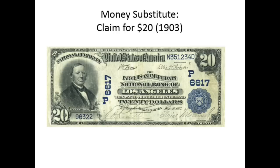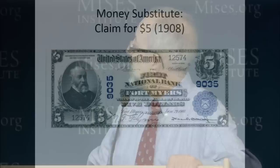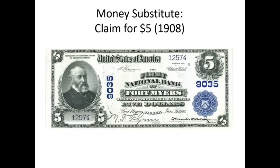You can see that on these notes, which were privately-issued. In 1903, this is a claim for $20 from a private bank — the Farmers and Merchants National Bank of Los Angeles. It says 'will pay to the bearer on demand $20.' Notice: it doesn't say that IS $20 — that's a claim to $20. $20 is one ounce of gold. Similarly, the First National Bank of Fort Myers in Florida 'will pay to the bearer on demand $5.' It's simply a claim — just like a claim to your laundry is not the suit itself.